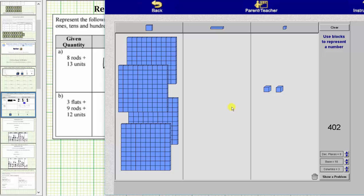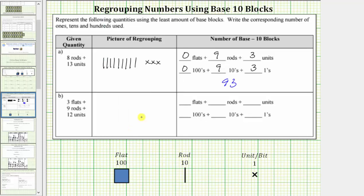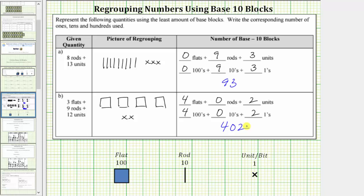We've now shown that three flats plus nine rods plus 12 units equals four flats plus two units, which equals 402. So for the picture, we'll sketch four flats and two units. So on the right, we have four flats plus zero rods plus two units, which is equivalent to four one hundreds plus zero tens plus two ones, which equals 402. I hope you found this helpful.